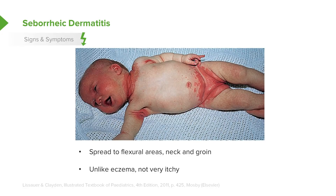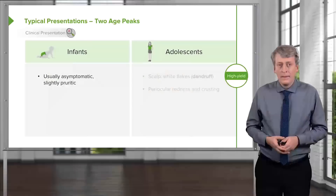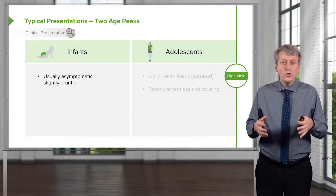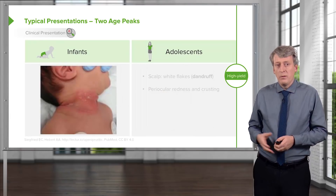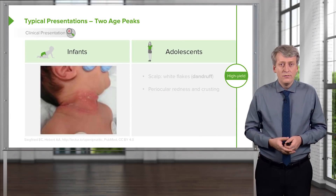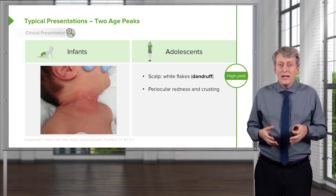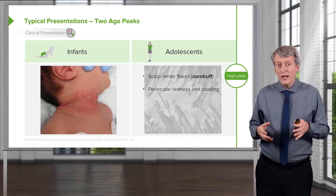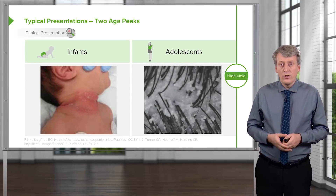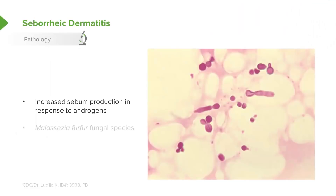Unlike eczema, this is not very itchy. In infants, it's usually asymptomatic, maybe slightly pruritic. Here's an example of it under this child's neck. In adolescence, it comes back typically as dandruff. Patients can get periocular redness and crusting as well. Patients will have increased sebum production in response to androgens.